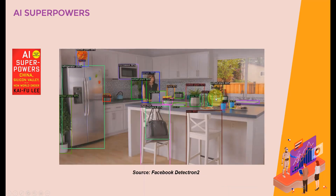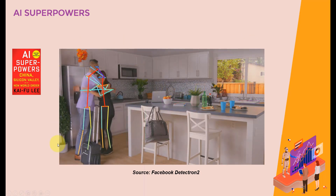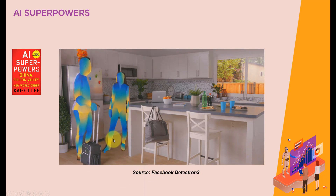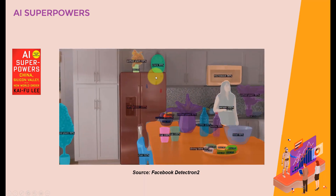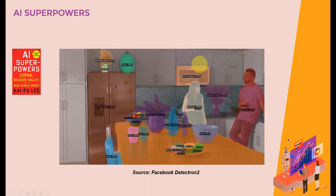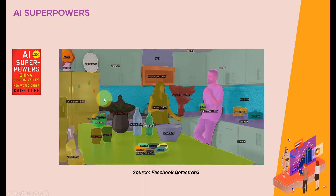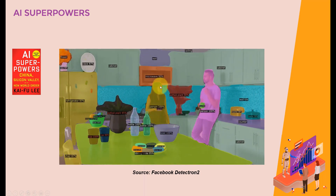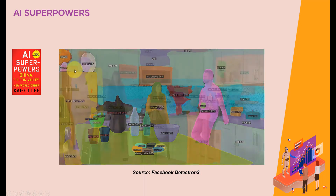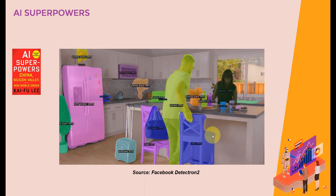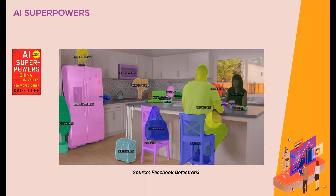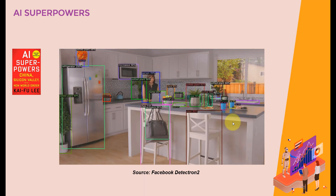A question I get a lot is: is AI really powerful? How powerful is AI? I've included a video here from a Facebook research group that shows you the power of artificial intelligence. This AI is able to predict all these different elements — it will tell you that this is a microwave with 95% confidence, this is a person with 100% confidence, this is a bowl, this is a bottle, a refrigerator — and it's doing that on a pixel level in real time. And please note that these AI models are just scratching the surface, this is just the beginning.